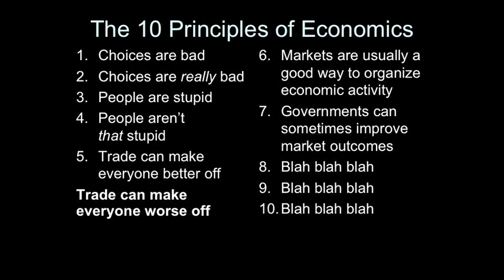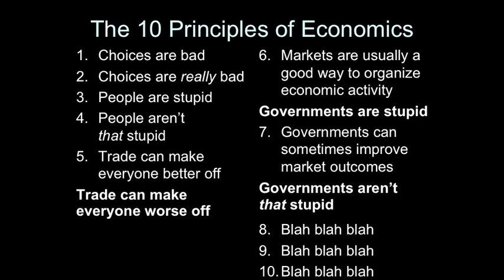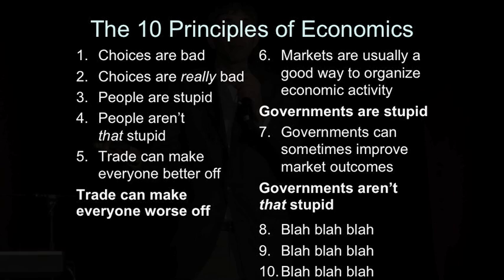Now that we've cleared that up, the last two principles: markets are usually a good way to organize economic activity — translation: governments are stupid. And governments can sometimes improve market outcomes — translation: governments aren't that stupid. These follow immediately from principle five and its translation. If trade can make everyone better off, what do we need government for? Just let people trade. But if trade can make everyone worse off, we better have a government around to stop people from trading.